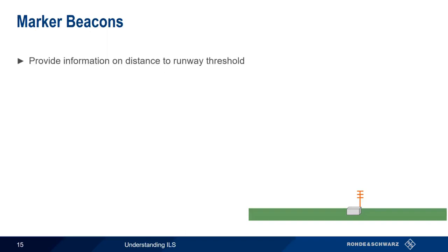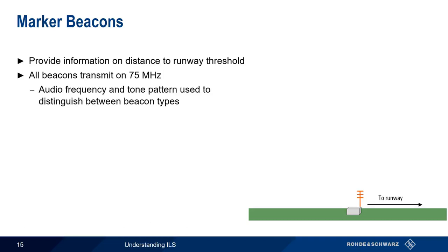Marker beacons provide information on the distance to the runway threshold. All marker beacons transmit on the same frequency of 75 MHz, so the audio frequency and pattern of audio tones transmitted by the beacon are used to distinguish between the different beacon types. There are three different types of beacons – outer, middle, and inner. As we'll see in a moment, these names refer to their relative distances from the runway threshold.